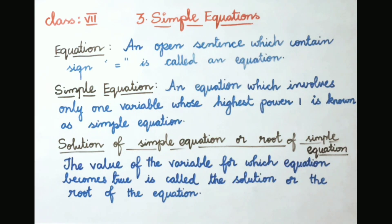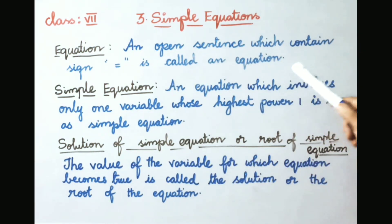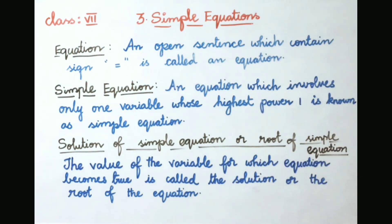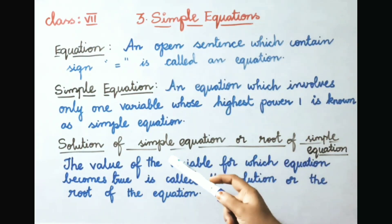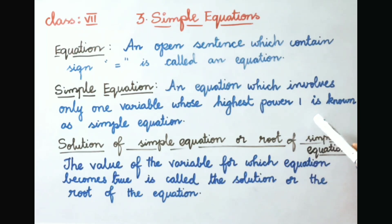Let us see what is an equation. An open sentence which contains an equal to sign is called an equation. An equation which involves only one variable whose highest power is 1 is known as a simple equation.